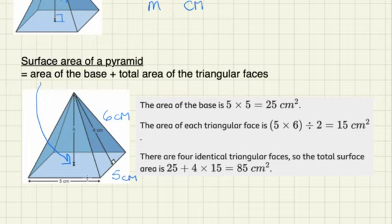And next we need to work out what this is. And because this is a square, and they all meet together at the same point here, then you have four identical triangles over here. So the area of each triangle is five centimeters, which is this distance here, multiplied by six, which is this distance here, divided by two.